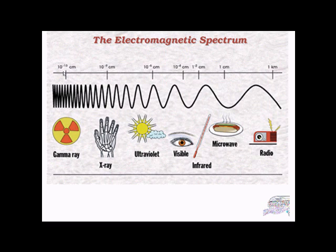Here's the electromagnetic spectrum displayed on one big scale. Gamma rays have a very short wavelength and high frequency at one end, while at the other end radio waves have a wavelength on the order of a kilometre — much longer than a gamma ray, but with a much lower frequency.